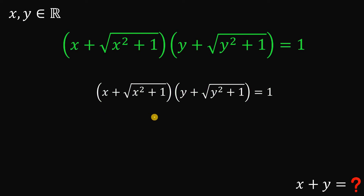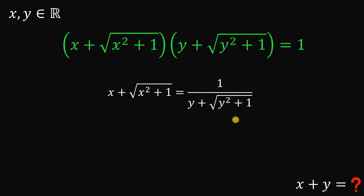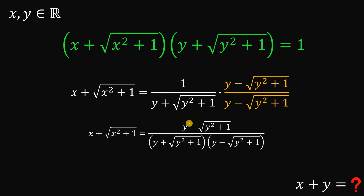First, what we're going to do is divide both sides by y plus square root of y squared plus 1. Since we have a radical on the denominator, we're going to rationalize it. So let's multiply the right-hand side by y minus square root of y squared plus 1, over y minus square root of y squared plus 1 — the conjugate of y plus square root of y squared plus 1. If we multiply this, we get in the numerator: 1 times y minus square root of y squared plus 1.